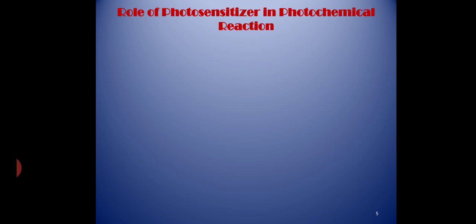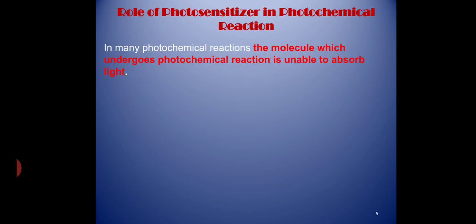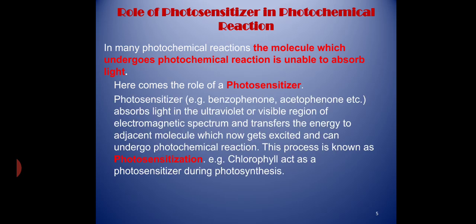We know that for a photochemical reaction to happen the molecule should absorb light, but how will a molecule absorb light if there is no chromophore? What happens if a molecule does not have a chromophore? Can these molecules undergo photochemical reactions? Yes, these molecules can also undergo photochemical reactions with the help of a photosensitizer. A photosensitizer absorbs light and transfers its energy to the adjacent molecule, which now gets excited and can undergo a photochemical reaction.